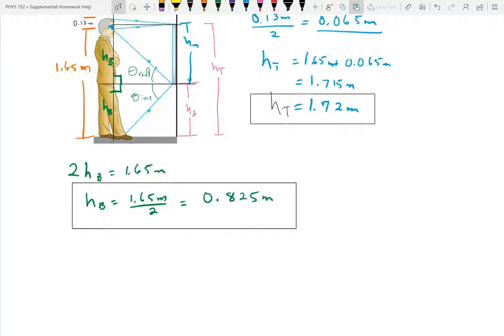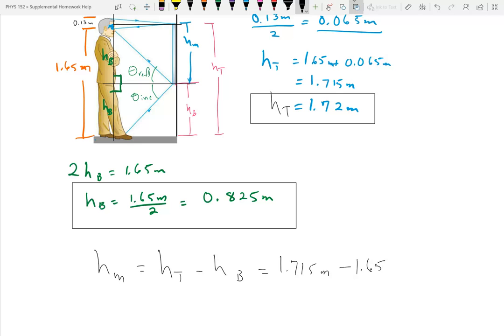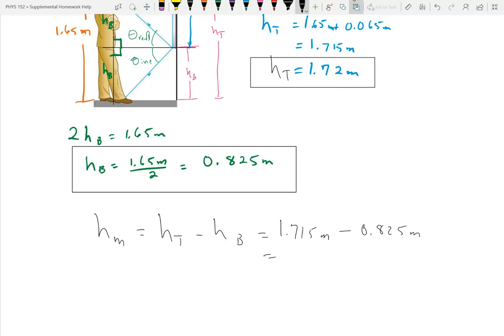So now we have two answers, and we're ready to get the final answer. And that is h, height of the mirror is equal to the height of the top minus height of the bottom. And I'm going to use the 1.715 meters because you don't want to throw away information until the end. So if we subtract those, 11 minus 2 is 9, and then 16.